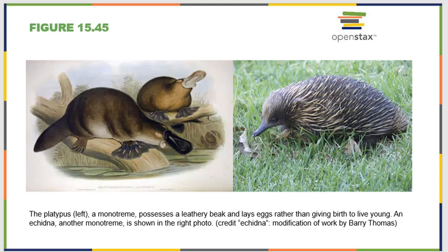The last major group are the mammals — organisms that have all previously mentioned characteristics but also have hair and the ability to produce milk, which makes them quite different. Not all of them give birth to live young. There is a group called monotremes, which includes platypi and members of Echidna living in Australia, and they give birth to leathery eggs that almost immediately hatch into live young. But they have hair and produce milk, and are therefore mammals.